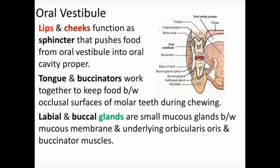The labial glands lie along the lips and the buccal glands lie along the buccinator muscle. These small glands secrete saliva and mucus, which mixes with food. They are located between the mucous membrane and the underlying orbicularis oris and buccinator muscles — deeply placed toward the inside of the lips and cheeks.